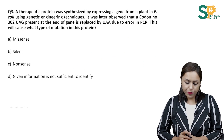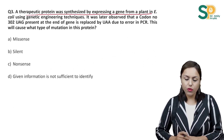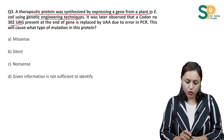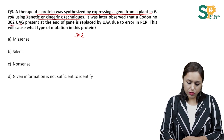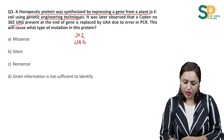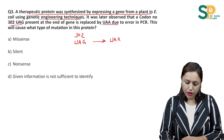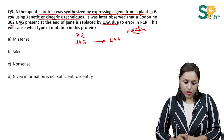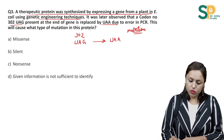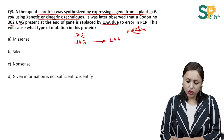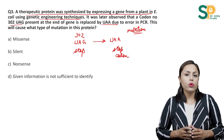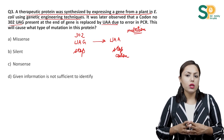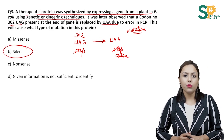Coming to question number 3: A therapeutic protein was synthesized by expressing a gene from a plant in E. coli using genetic engineering techniques. It was later observed that codon number 302, UAG, present at the end of the gene, is replaced by UAA due to an error in PCR. We have three stop codons: UAA, UAG, and UGA. So this is also a stop codon replaced by a stop codon — there will be no change in protein. Therefore, this will be a silent mutation.